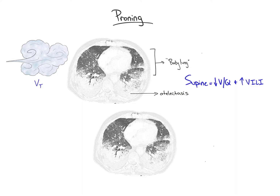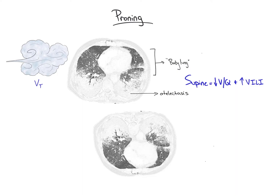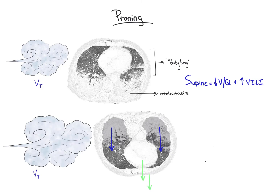A few things happen when the patient is transitioned to the prone position. First, prone positioning decreases atelectasis and improves recruitment, opening up the dorsal and caudal lung zones. In addition, there is redistribution of dependent edema with gravity. Finally, the weight of the heart and chest wall are directed downward and away from the lung, relieving compression and increasing overall lung compliance. These changes lead to a more homogeneously distributed tidal volume across the entire ventral-to-dorsal lung axis, improving V/Q matching and decreasing lung stress, resulting in less ventilator-induced lung injury.